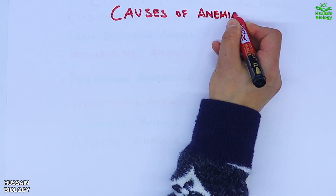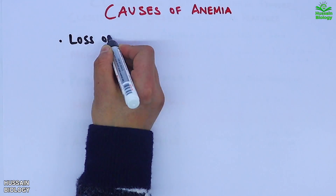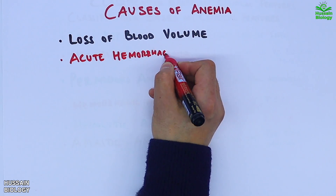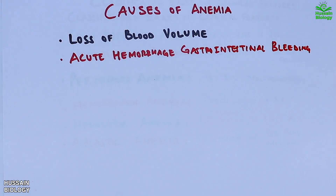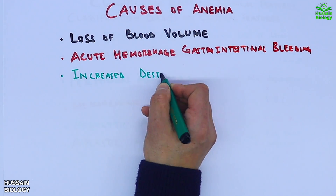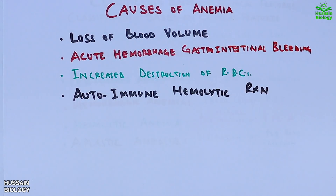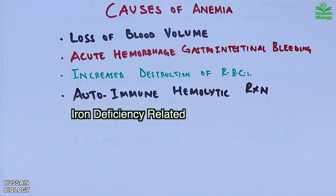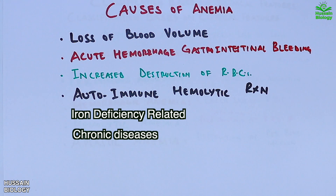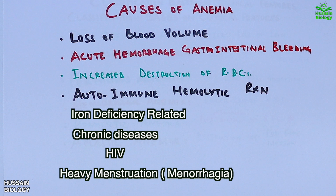The causes of anemia include: loss of blood volume, acute hemorrhage, gastrointestinal bleeding, increased destruction of RBCs, autoimmune reactions, iron deficiency, folate deficiency, chronic diseases, inherited RBC disorders, HIV, heavy menstruation, and infection, among many other causes.